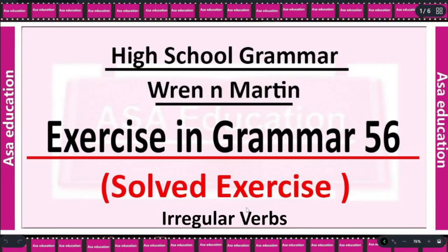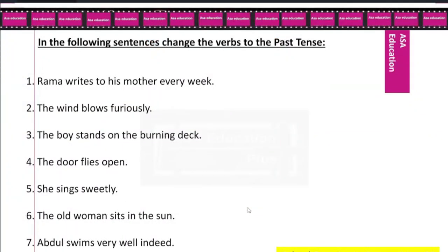Hello children, welcome to Asa Education. Let's do Exercise Number 56 from Wren and Martin High School Grammar book. The topic is irregular verbs. In the following sentences, change the verbs to the past tense.